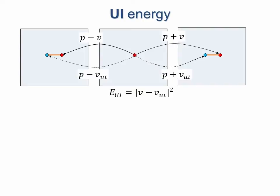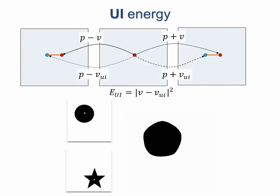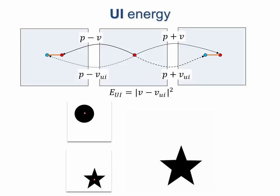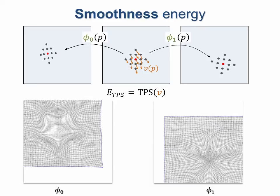The UI energy term ensures that user-specified correspondence points are matched. In this example, the center of the circle is mapped to the center of the star, as specified by the red correspondence point. Away from any constraints, the smoothness energy term ensures that the resulting vector field favors affine functions in the mappings to both left and right images.